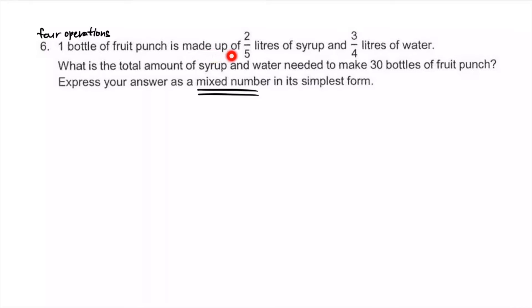A bottle of fruit punch is made from this number of liters of syrup and this number of liters of water. We're going to combine them - that's an addition step. The total amount to make 30 bottles. Let's find what we need for one bottle first: 2/5 liters plus 3/4 liters. We have to make the denominators the same first.